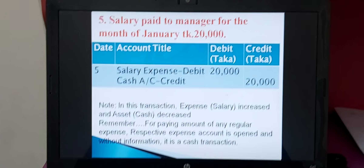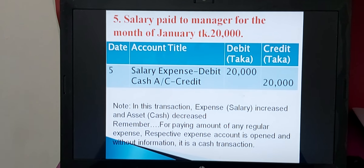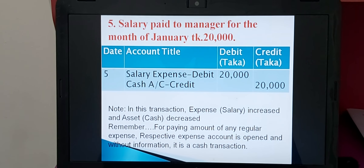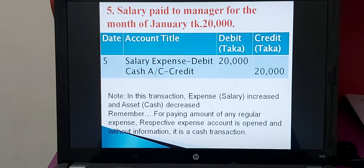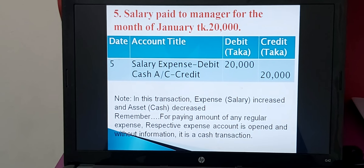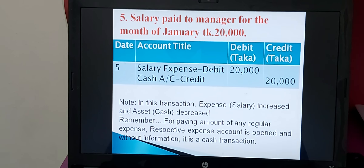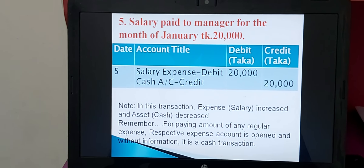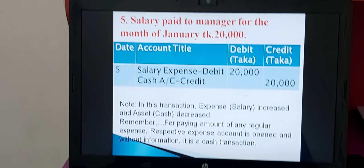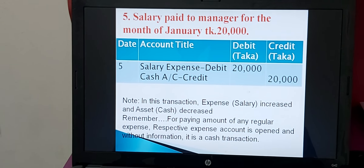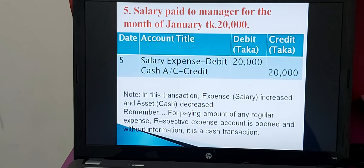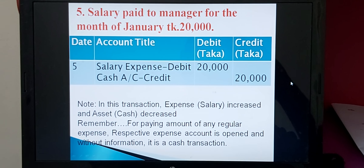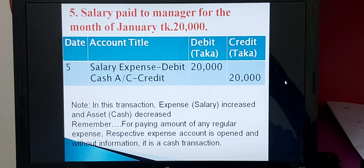Transaction number five: salary paid to manager for the month of January, taka 20,000. Salary paid is also one kind of regular expenditure for any business. Salary is one kind of expense. When salary is paid, expense is increased, so salary expense account is debit. The paying amount — cash has gone from the business. We know that cash account is an asset account; when asset decreases, the asset account is credit. For this transaction, salary expense account is debit, cash account is credit.